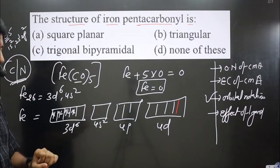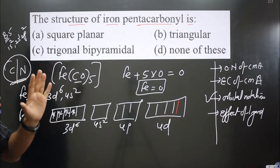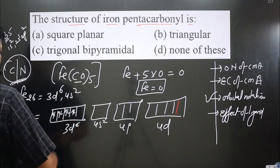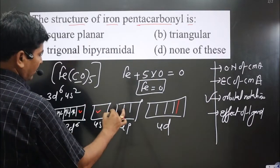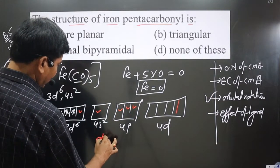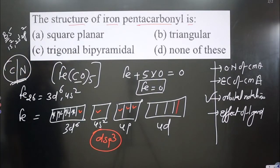How many ligands are there? Five. So this iron central metal atom needs to avail five vacant orbitals for the ligands. We have first, second, third, fourth, and fifth vacant orbitals. So we are getting the hybridization dsp3.